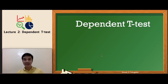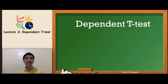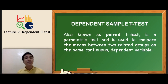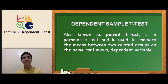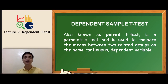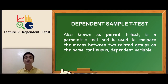Hello everyone and welcome back in our lecture series. Today we are going to talk about dependent t-tests. The question is: when is the best time to use dependent sample t-tests? Dependent sample t-tests is also known as paired t-test. It is a parametric test and is used to compare the means between two related groups. Take note of the word 'related'.